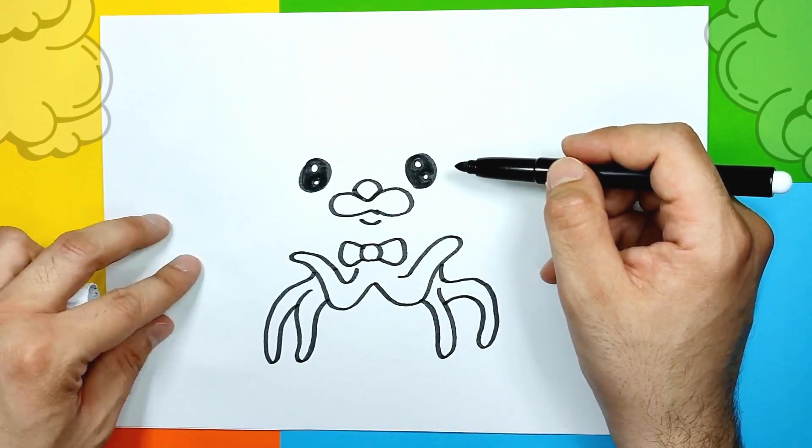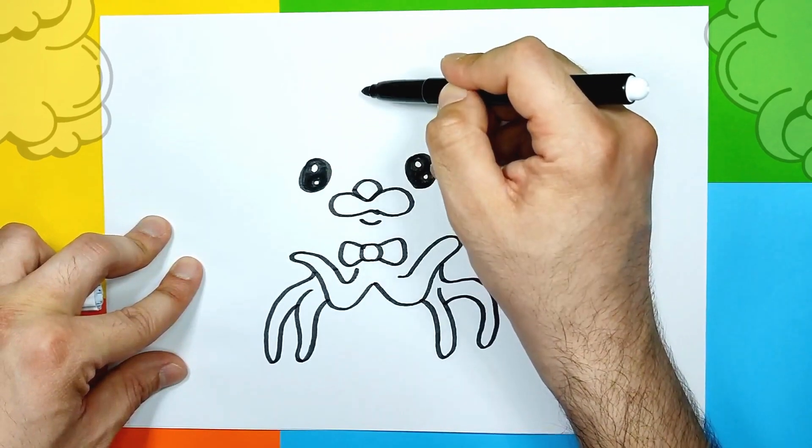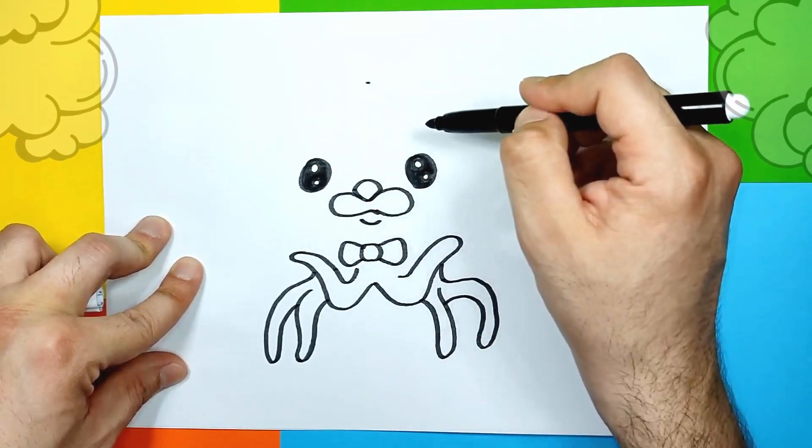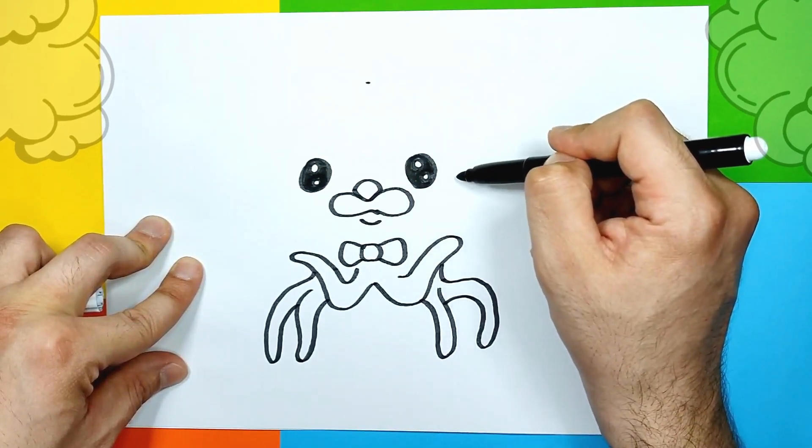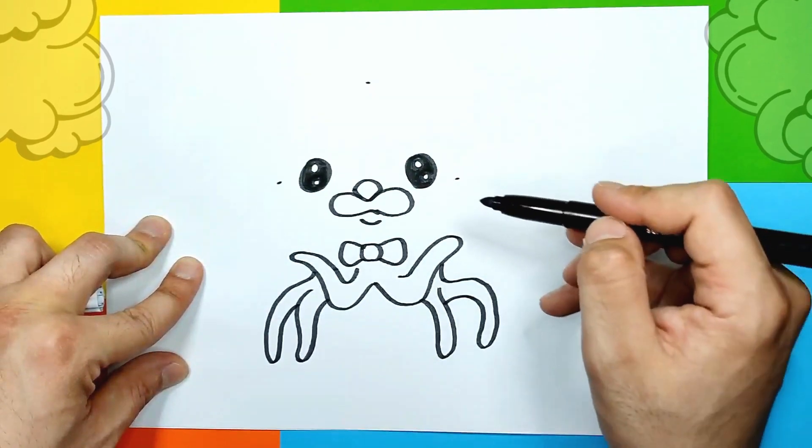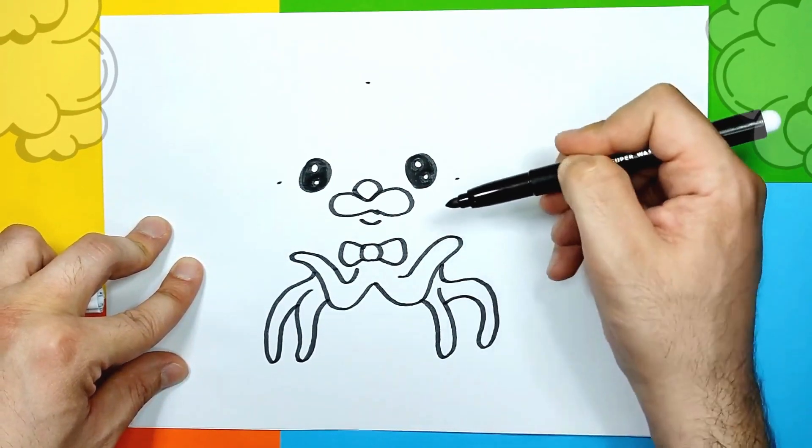Now we're gonna make his head. It's gonna go all the way up. He has a big forehead. We're gonna put also two dots on the side just like this. And then we're gonna finish somewhere, let's say here.